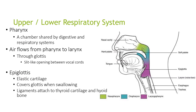Looking at the upper-lower respiratory system, you have the pharynx, which is a chamber shared by the digestive and respiratory systems. Air flows from the pharynx to the larynx through the glottis, which is a slit-like opening between the vocal cords. The epiglottis is a less elastic cartilage that covers the glottis when swallowing, with ligaments attached to the thyroid cartilage and hyoid bone.